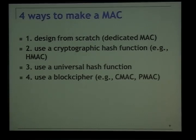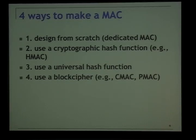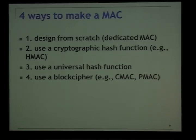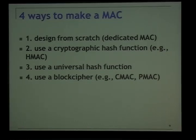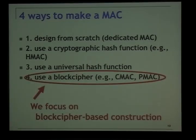There are four ways to make a MAC. One is to design from scratch, giving a dedicated MAC. Second is to utilize a cryptographic hash function like MD5 or SHA-1; a well-known example is HMAC. Third is to construct your MAC using a universal hash function combined with a cryptographic primitive. And lastly, you can use a block cipher — examples include CMAC, the NIST standard, and PMAC. This work focuses on block cipher-based construction.